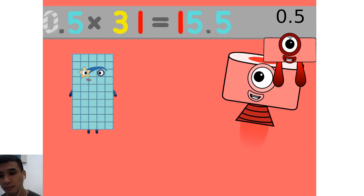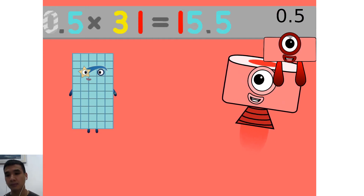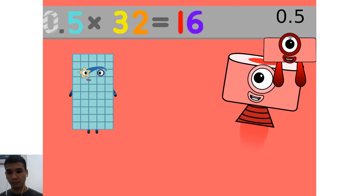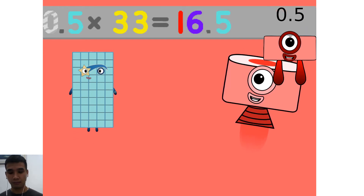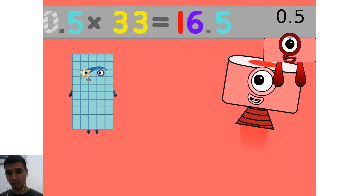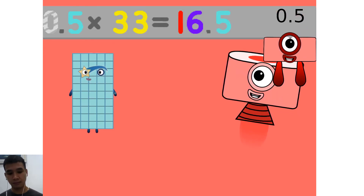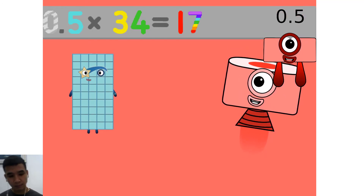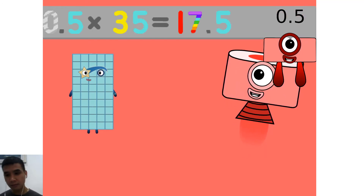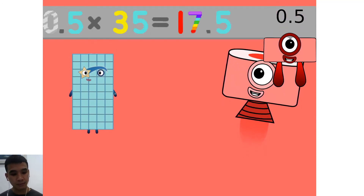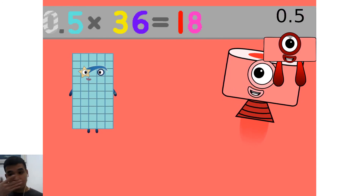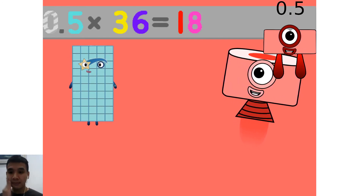0.5 times 31 equals 15.5. 0.5 times 32 equals 16. 0.5 times 33 equals 16.5. 0.5 times 34 equals 17. 0.5 times 35 equals 17.5. 0.5 times 36 equals 18.